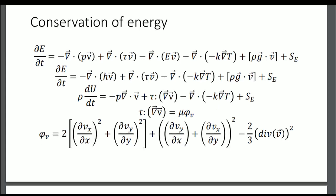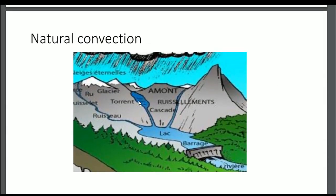Now we're going to talk about conservation of energy — one of the conservation equations discussed in a previous video. The differential of energy equals the divergence of pressure times speed, plus the divergence of the viscous stress tensor times v, minus the divergence of energy times v, minus the divergence of negative k times the gradient of T. This last term represents the thermal flow from outside.